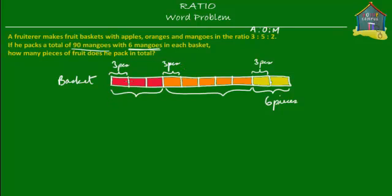So the total number of apples would then be three sets times three pieces — that's three times three, which is equal to nine pieces. So each basket has got nine pieces of apples. And the oranges? There are five sets of oranges, and each set has three pieces of oranges. Then the total number of oranges would be three times five, and that's 15 pieces. So each basket has got nine apples, 15 oranges, and six mangoes. That's one basket.